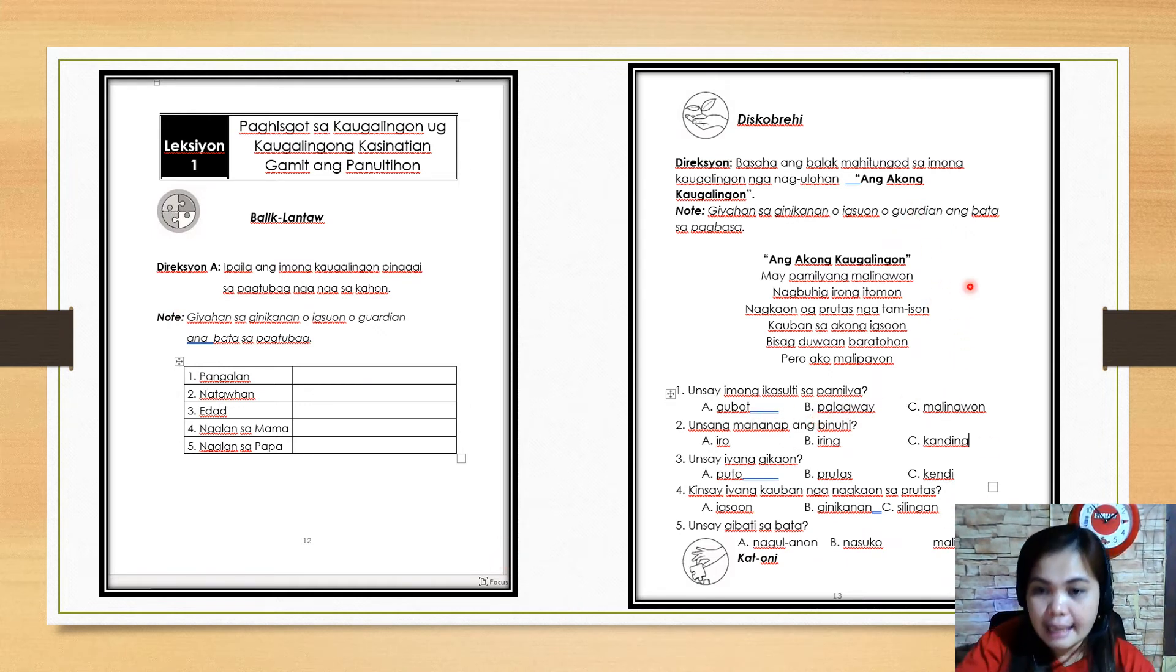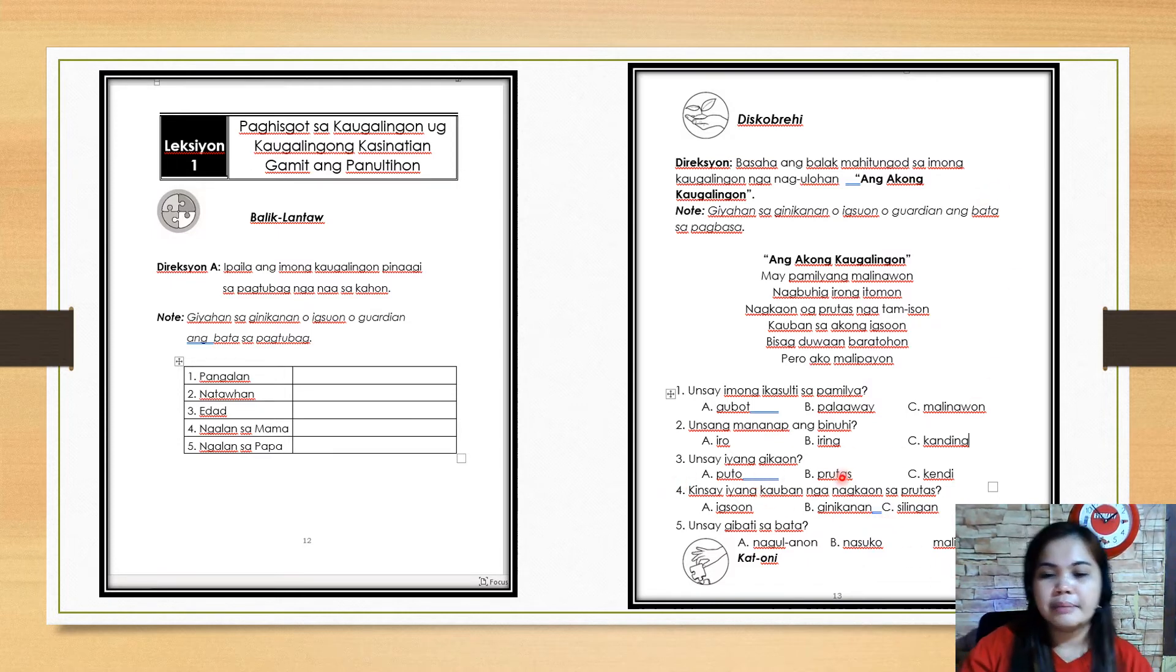Next number two: what kind of animal do they take care or what is their pet animal? A: iro or dog. B: iring or cat. Letter C: canding or goat. Number three: what is the dog? What does the dog eat or what did the dog eat?